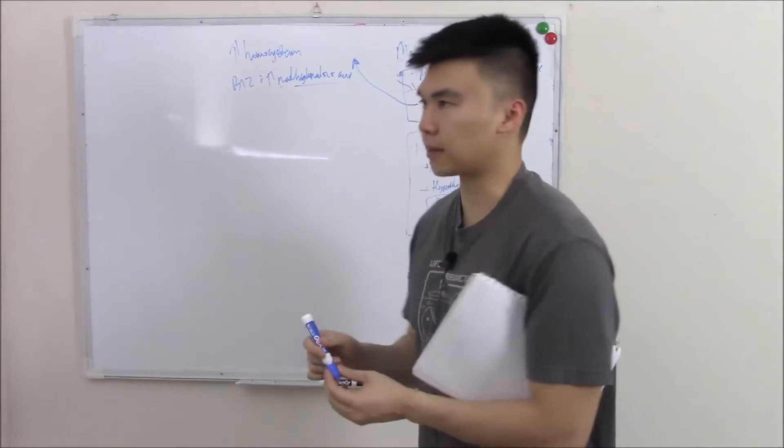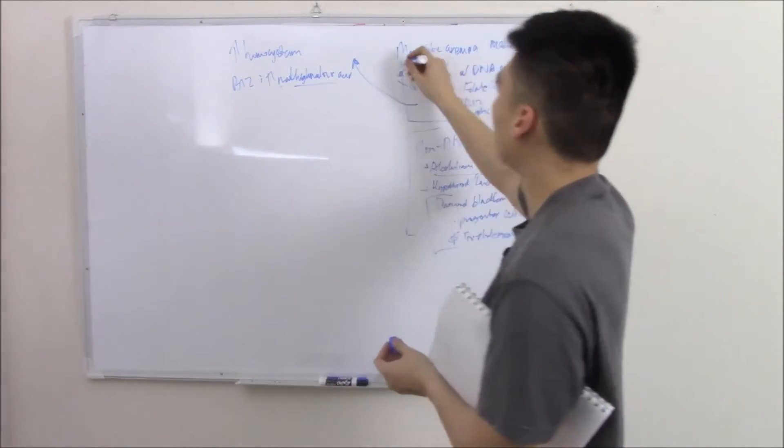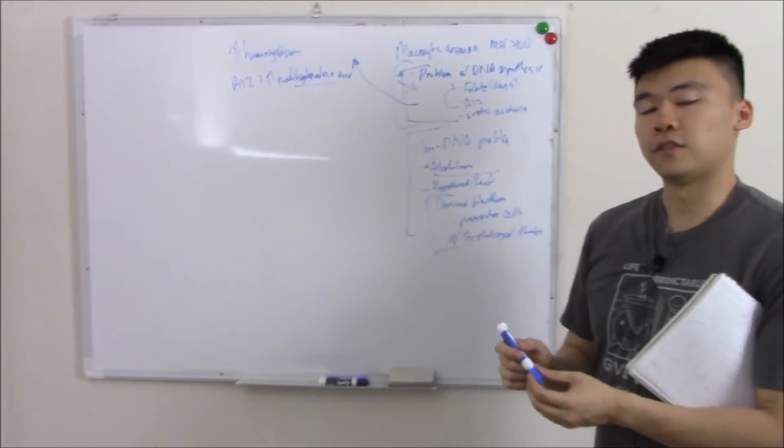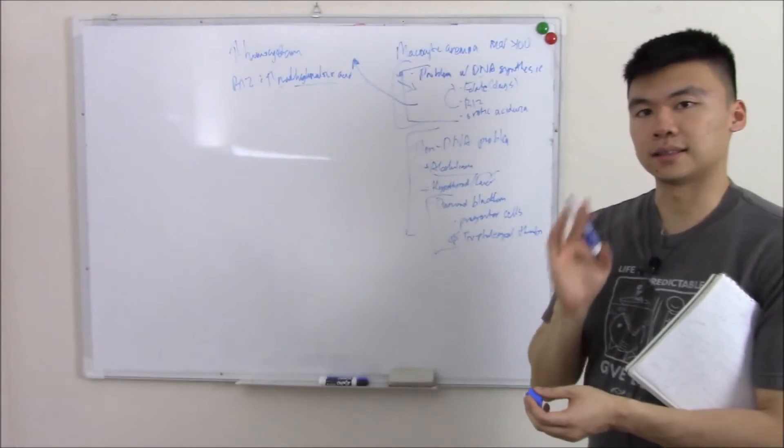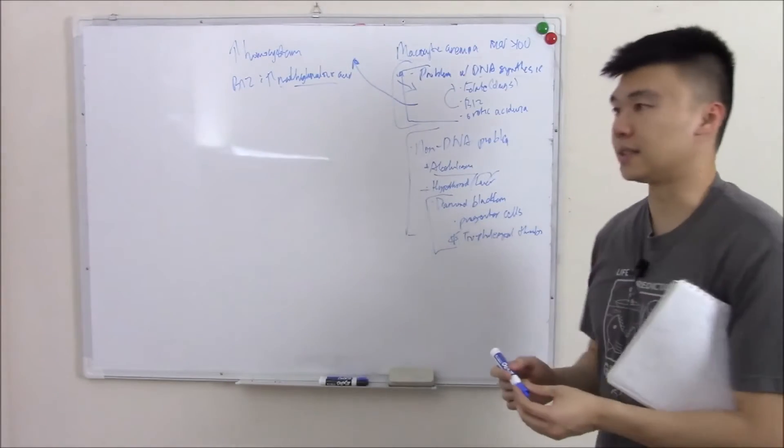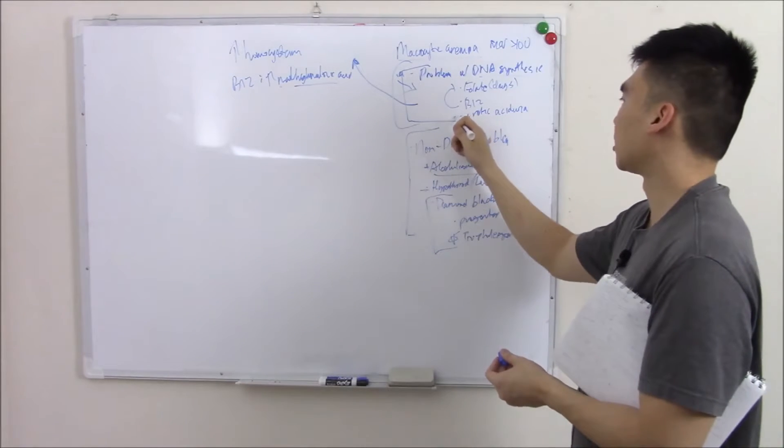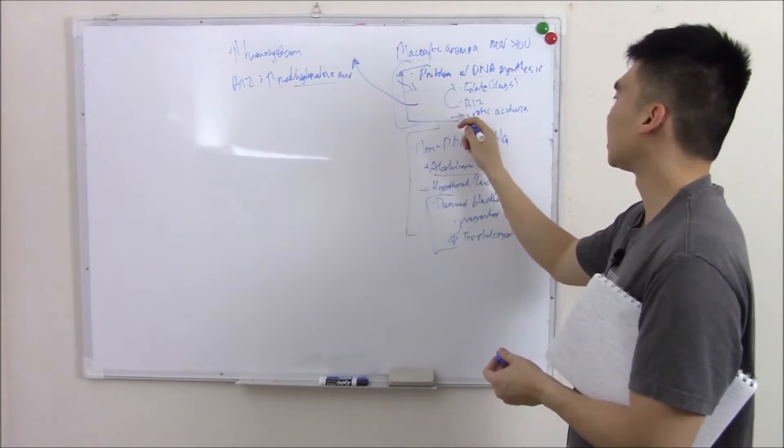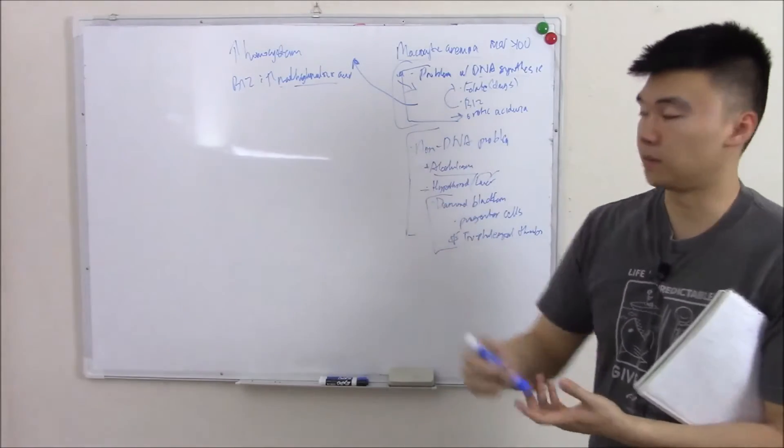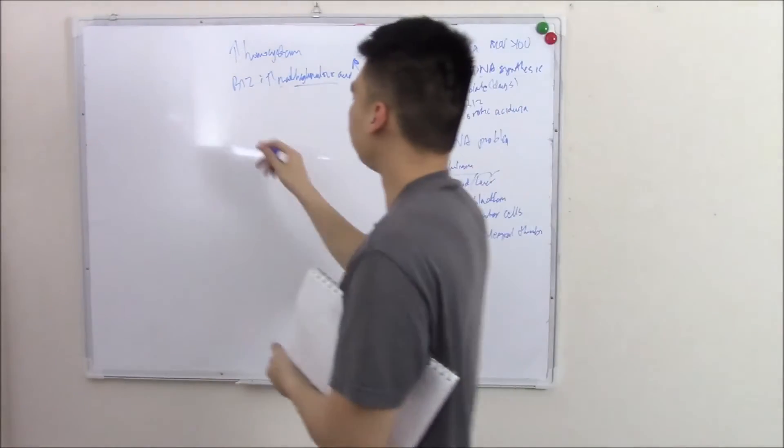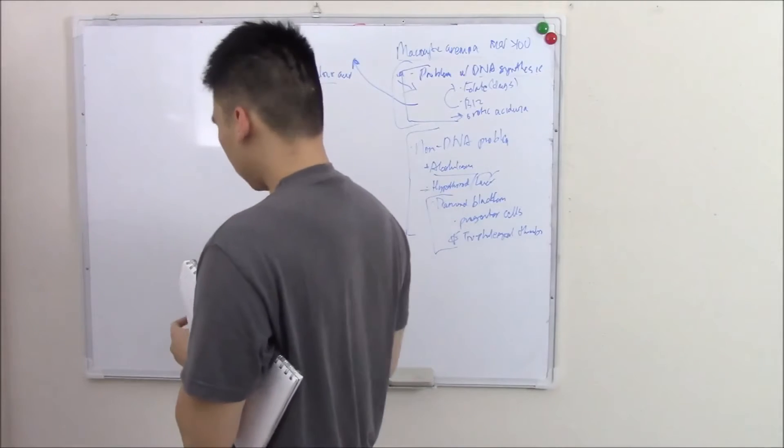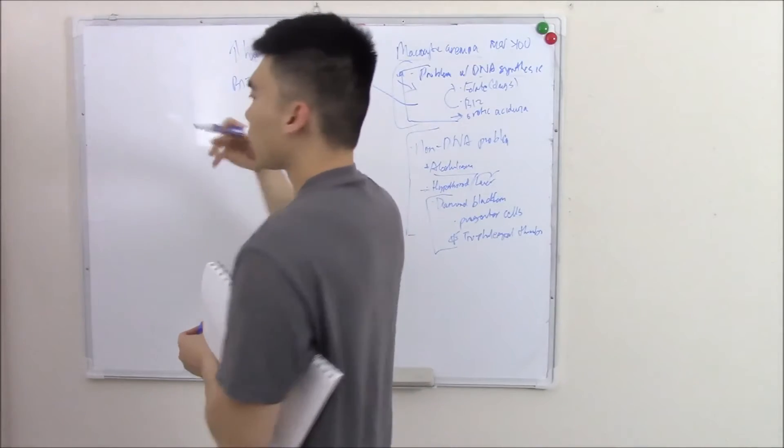Let's say a patient comes in with macrocytic megaloblastic anemia and you give folate and B12 and the patient doesn't get better. Well, by default, what do you think it is? Maybe orotic aciduria. This is an enzyme deficiency, so it's probably seen more in kids. So it'd be a kid patient that has this type of anemia. In your pathway in your synthesis of pyrimidines,